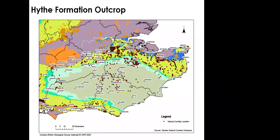Looking at the outcrop pattern across southeast England, the pale green colour shows the Hythe Formation starting at Hythe, running inland towards Maidstone, across to Godalming, down to Petersfield, and back to the coast just north of Eastbourne — an arcuate outcrop of variable width. I'll concentrate principally on the Maidstone area, where there are numerous red dots indicating natural cavity and gull locations, and where the outcrop is about 10 to 12 kilometres wide.